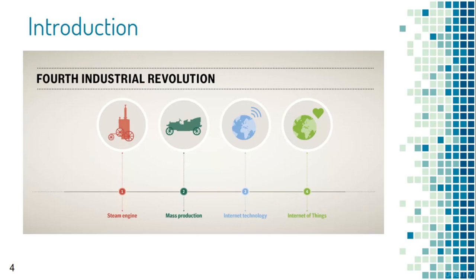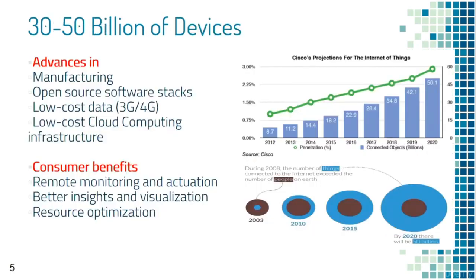IoT has set the stage for the 4th Industrial Revolution. Advances in manufacturing and open source software have made it possible for embedded systems, actuators, and sensors to communicate via the internet. The cost of 3G, 4G data, and cloud computing infrastructure are going down, making adoption far easier — as reflected in the Cisco projection of 50 billion connected devices by 2020. The collected data can be processed with next-generation tools for better insights, visualization, and resource optimization.